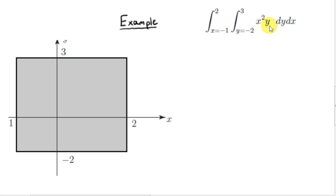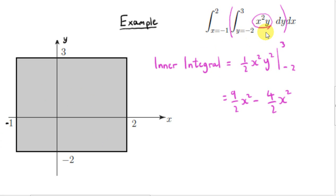Let's take this next example. The surface is x squared y, and we want the volume between this surface and a rectangular region in the xy plane. The sides of the rectangle run from minus 1 to plus 2, and from minus 2 to plus 3 — these are the limits of the integrals. For the inner integral, we integrate x squared y with respect to y from minus 2 to 3, treating x squared as a constant. Integrating y gives a half y squared, so we get x squared times a half y squared. Plugging in 3 gives 9 halves x squared, and plugging in minus 2 gives 2 halves x squared, leaving 5 halves x squared.